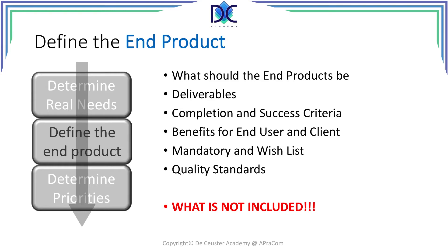Very important is the mandatory list — what are the features that have to be there — and what is the wish list, what would be nice to have. If we have time and money, we could add those elements from the wish list to the project. We have to identify the quality standards and any regulations or other documents that relate to the construction of the end product. And the last very important part is to clearly define what is not included. In many cases people forget to add what is not included. When you don't clearly specify this, people may make assumptions that some items are part of the project.